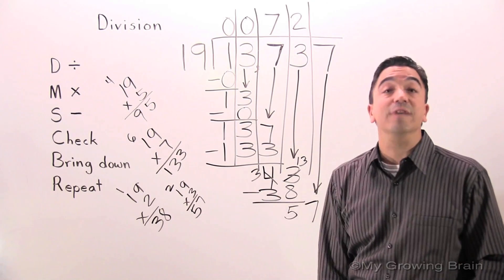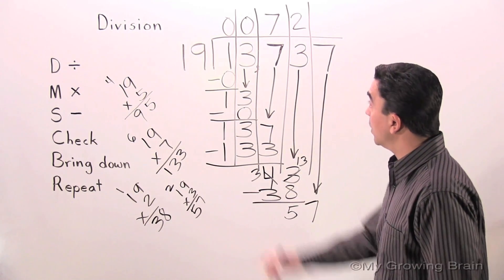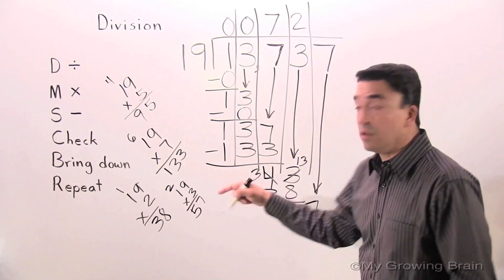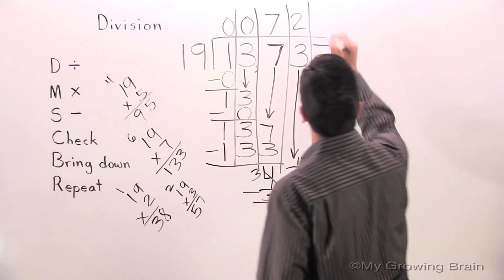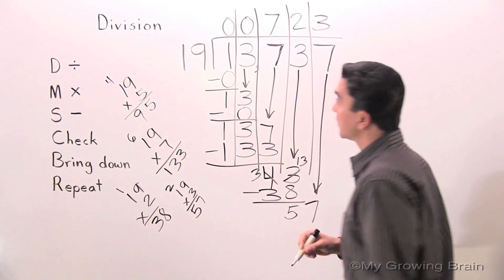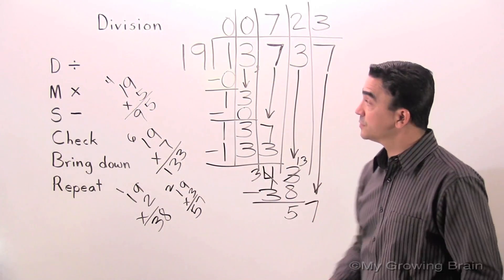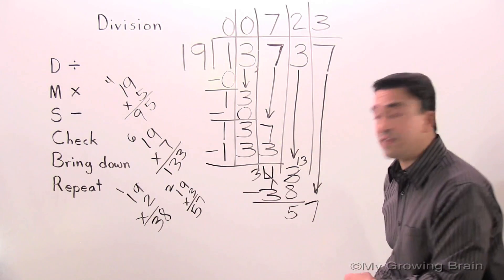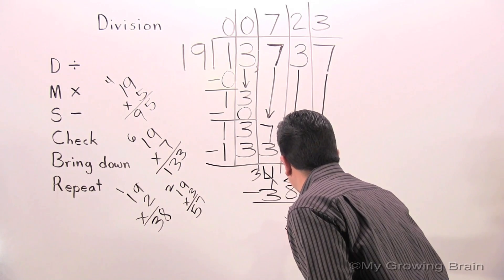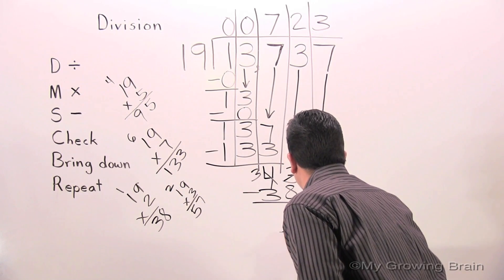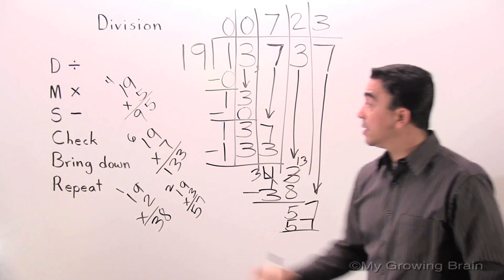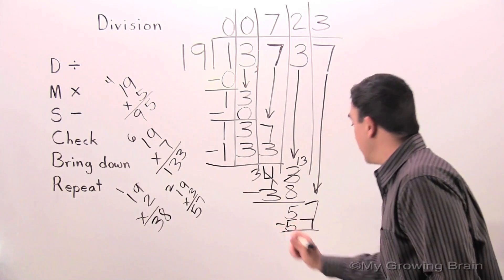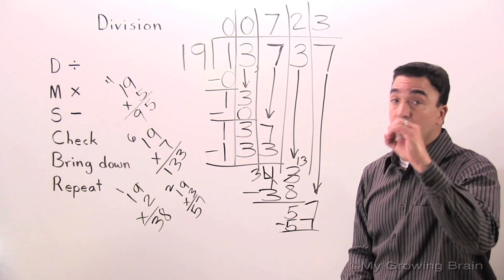What do you know? 57. So, therefore, 19 goes into 57 three times. 19 times 3. Because we are multiplying. Is 57. Next step. Subtract. 57 minus 57. 0.